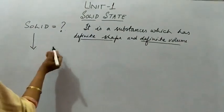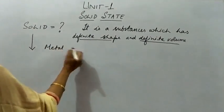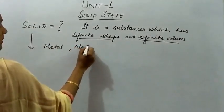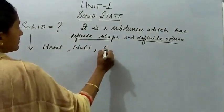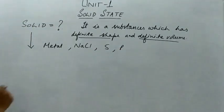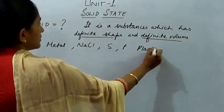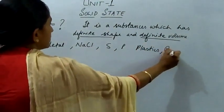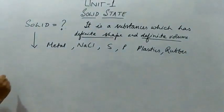Now here we can take an example of any metal or a salt here, sodium chloride, a non-metal like phosphorus, sulphur. They all come under the solid. Even plastics, rubber, they are all solid.